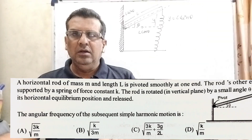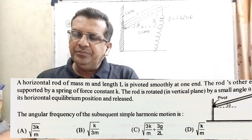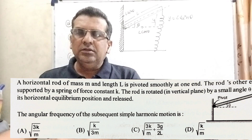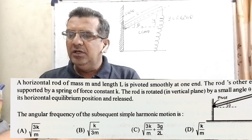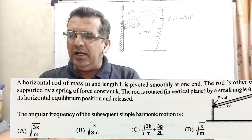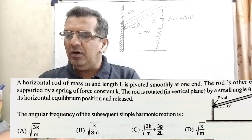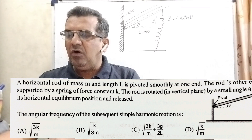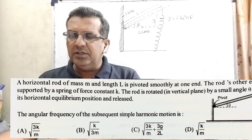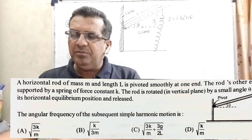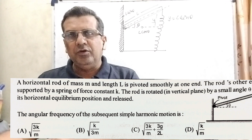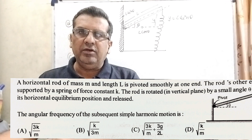Thank you once again. Now here is the question. A horizontal rod of mass m and length L is pivoted smoothly at one end. The rod's other end is supported by a spring of force constant K. The rod is rotated by a small angle theta from its horizontal equilibrium position and released. The angular frequency of the subsequent simple harmonic motion is: